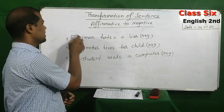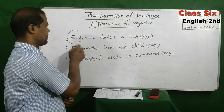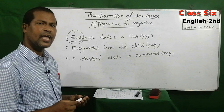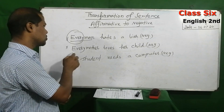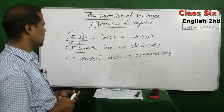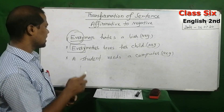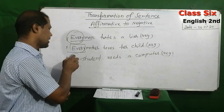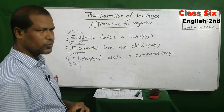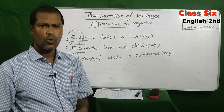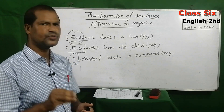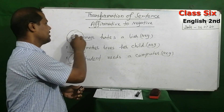In the first two sentences we can see the subject used with 'every,' and in the last sentence the subject is used with 'a.' So when you see a subject with 'every' or 'a' in a sentence, a specific rule applies.